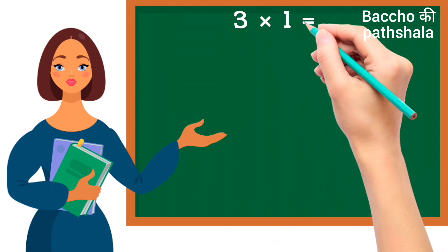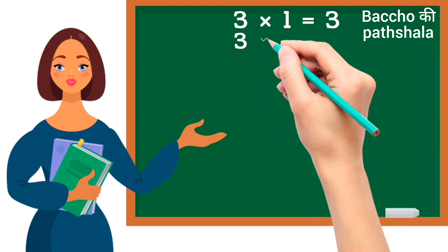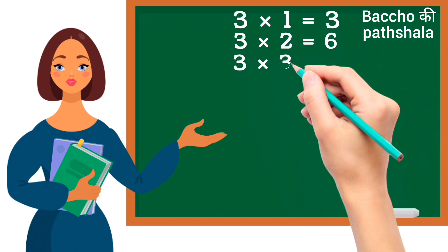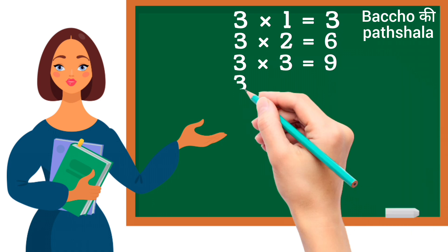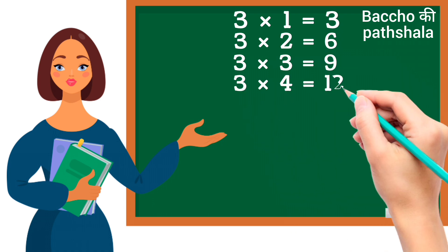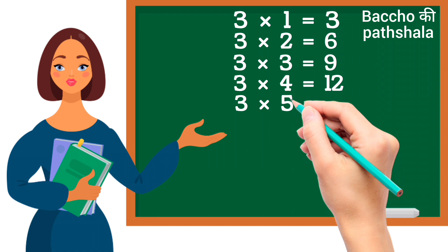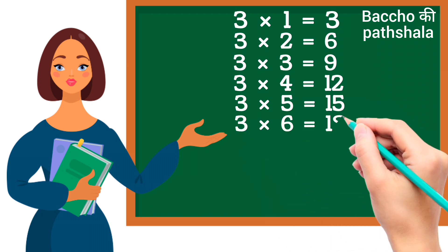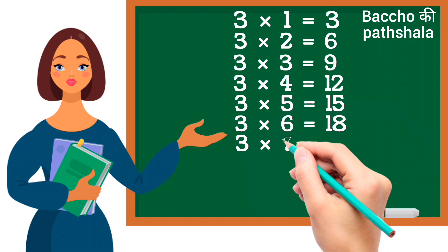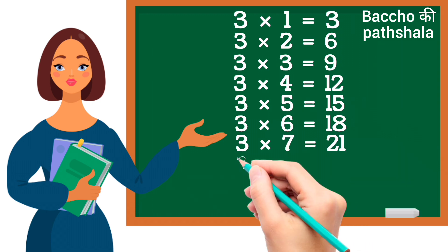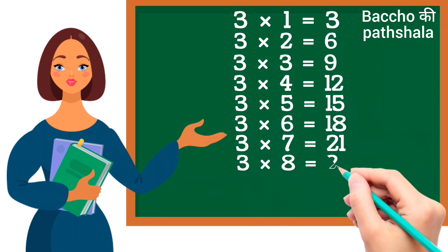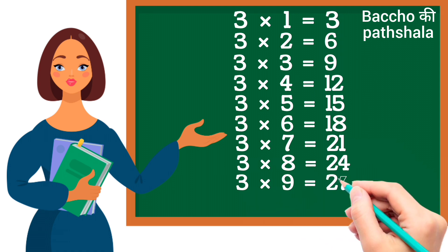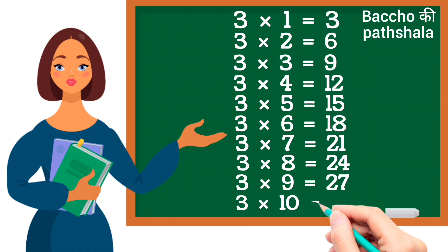Three ones are three. Three twos are six. Three threes are nine. Three fours are twelve. Three fives are fifteen. Three sixes are eighteen. Three sevens are twenty-one. Three eights are twenty-four. Three nines are twenty-seven. Three tens are thirty.